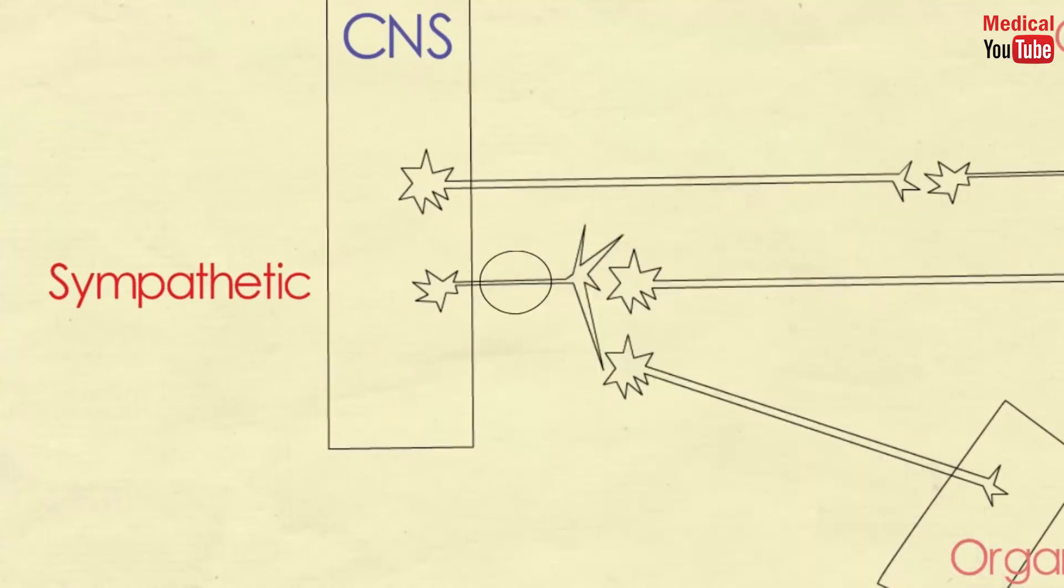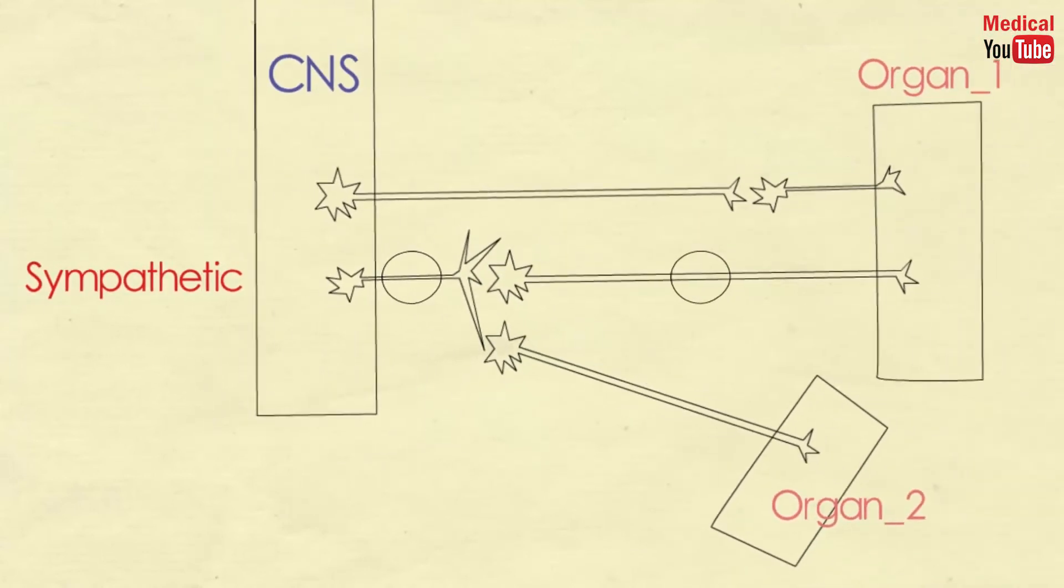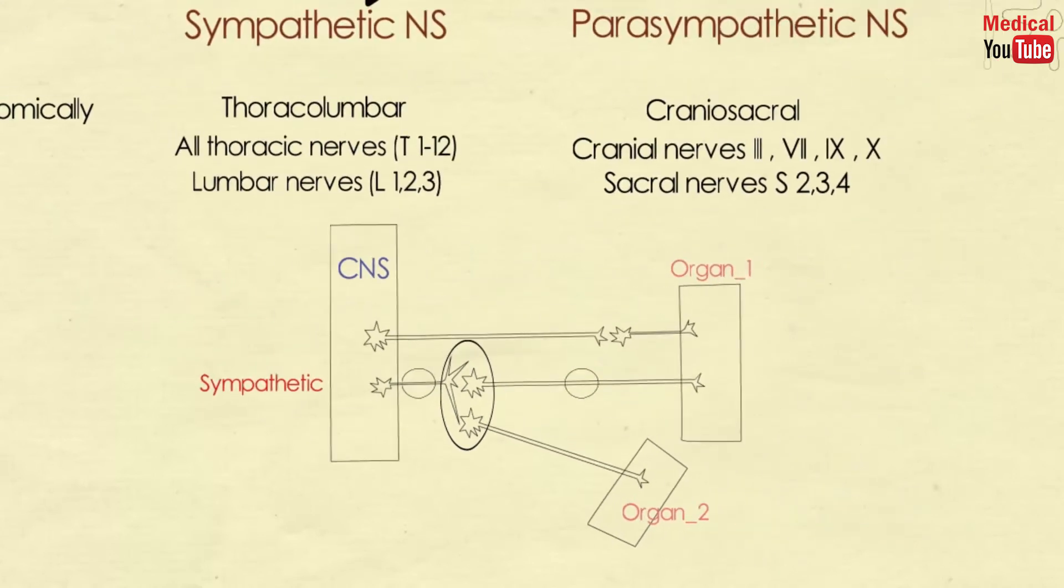The preganglionic neuron in the sympathetic division is short compared to the postganglionic one. In most cases, the preganglionic nerve endings of the sympathetic nervous system are highly branched, enabling one preganglionic neuron to interact with many postganglionic neurons, so giving generalized effect. While in the parasympathetic division the opposite is found.